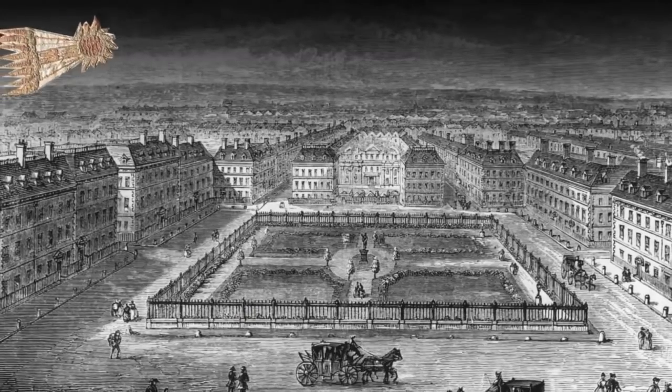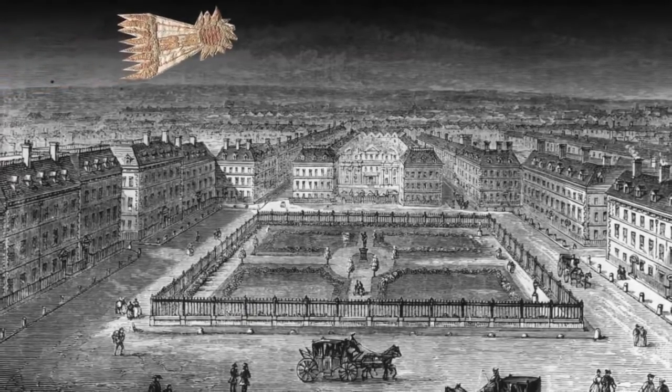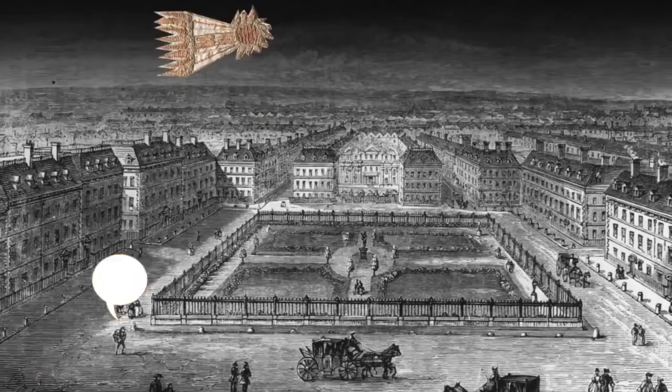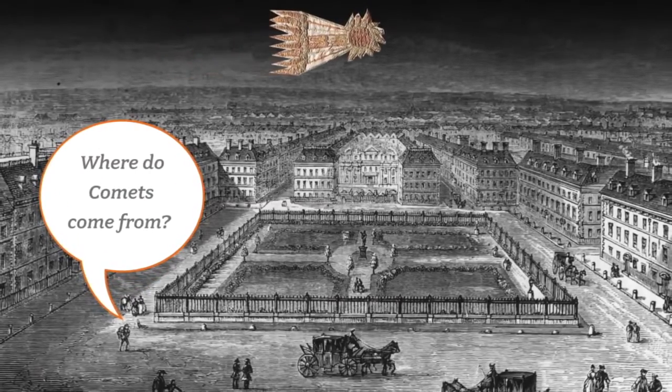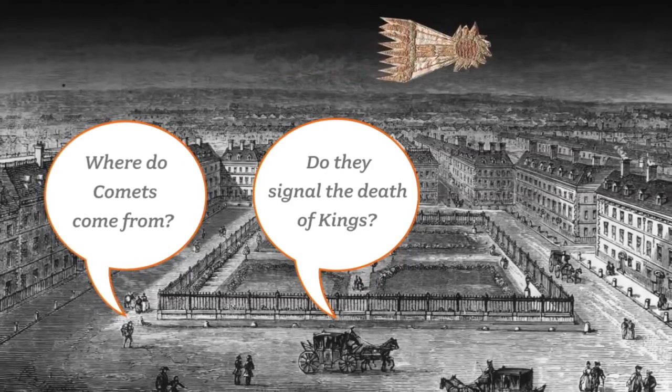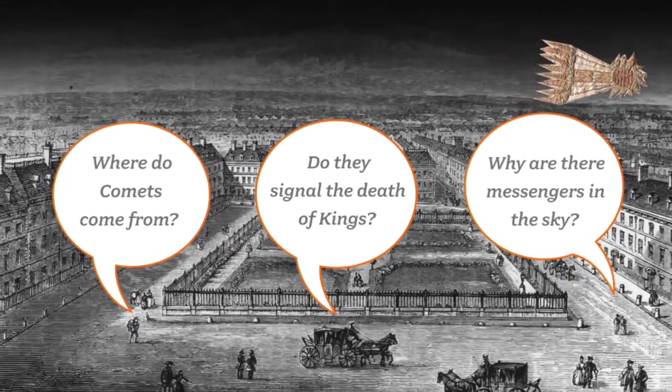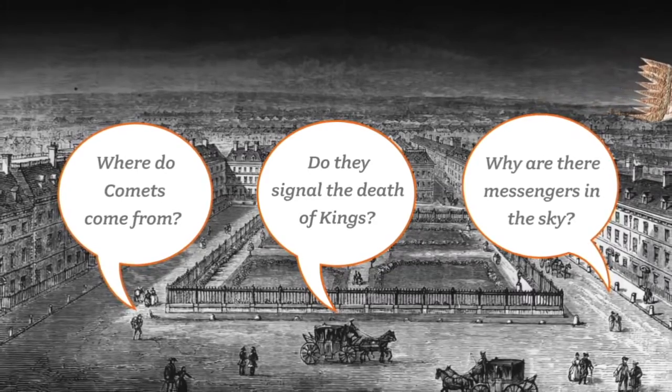sailed over London once again in 1682. This time everyone was asking the question, where do comets come from? Do they signal the death of the king? Why do we have messengers from the heavens in the sky?